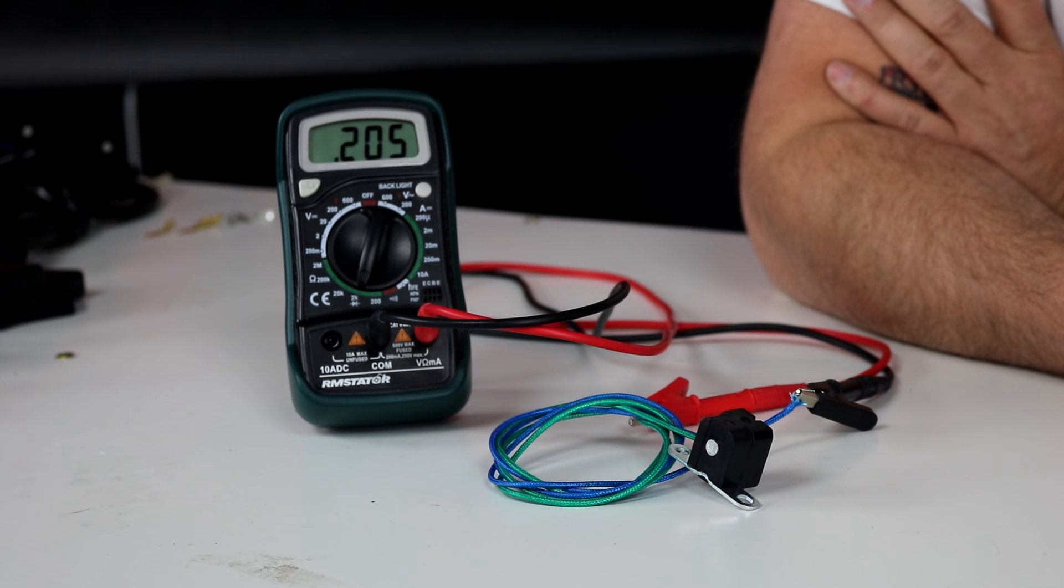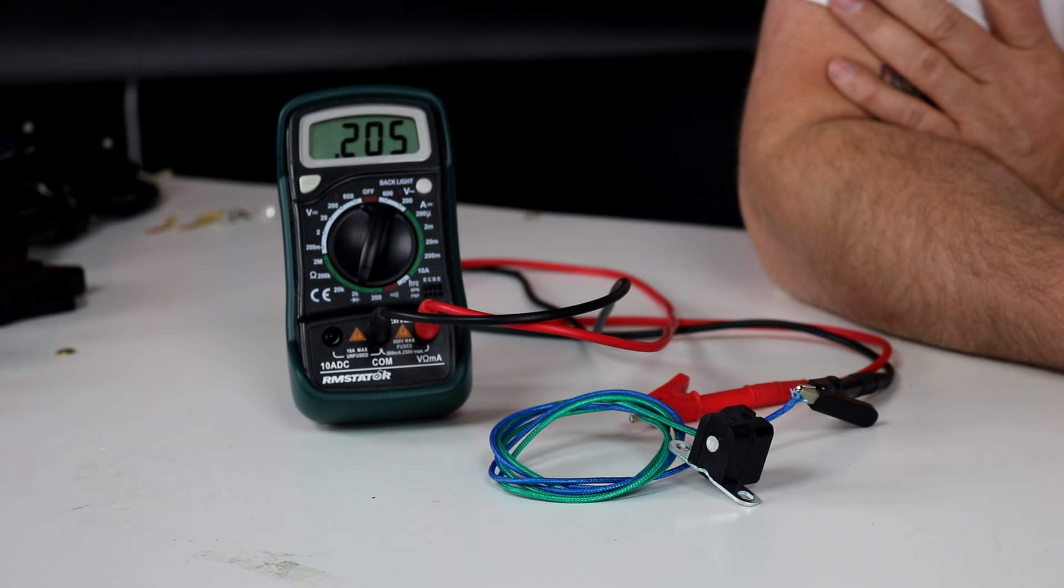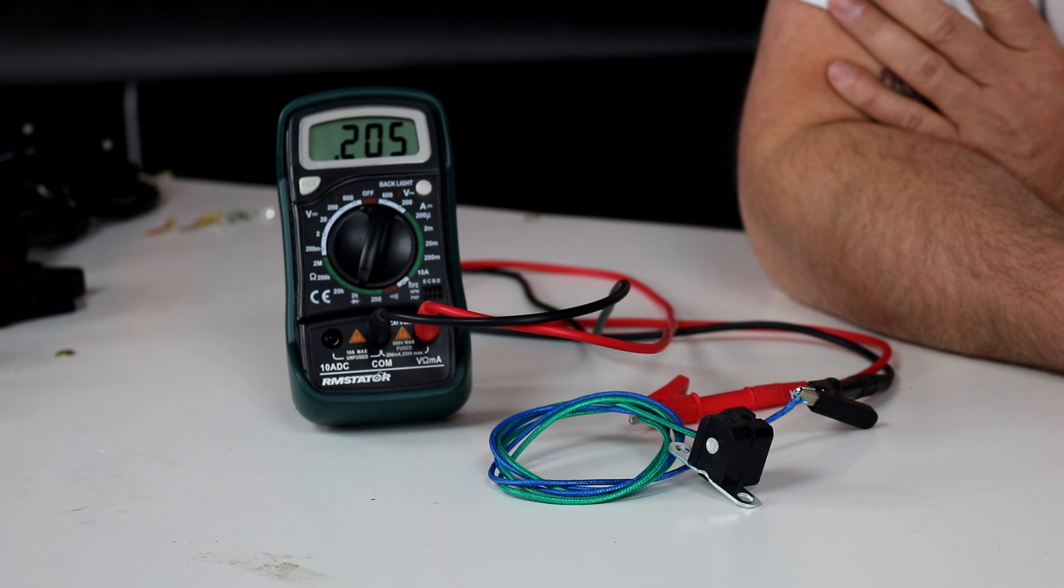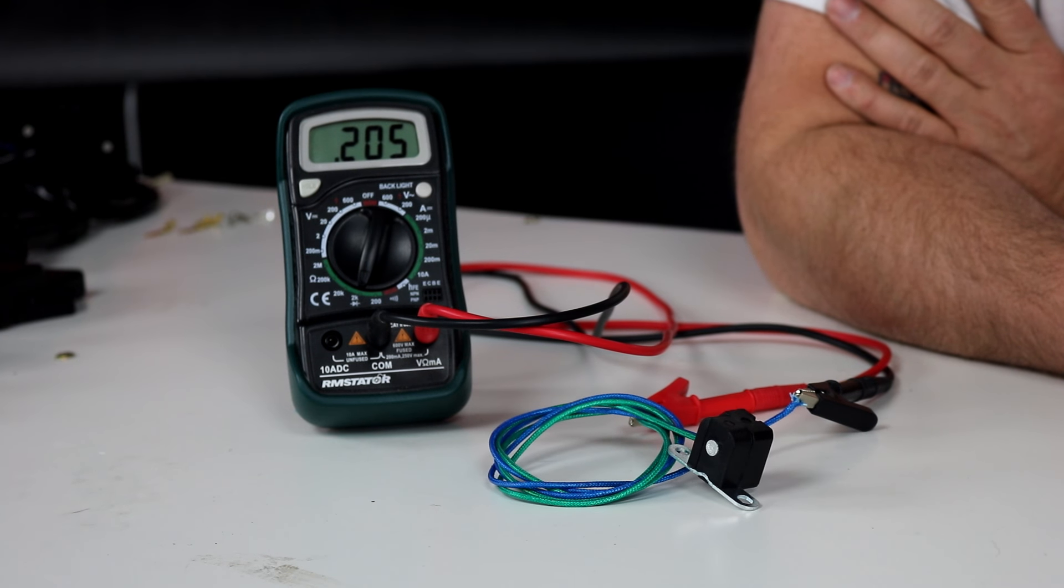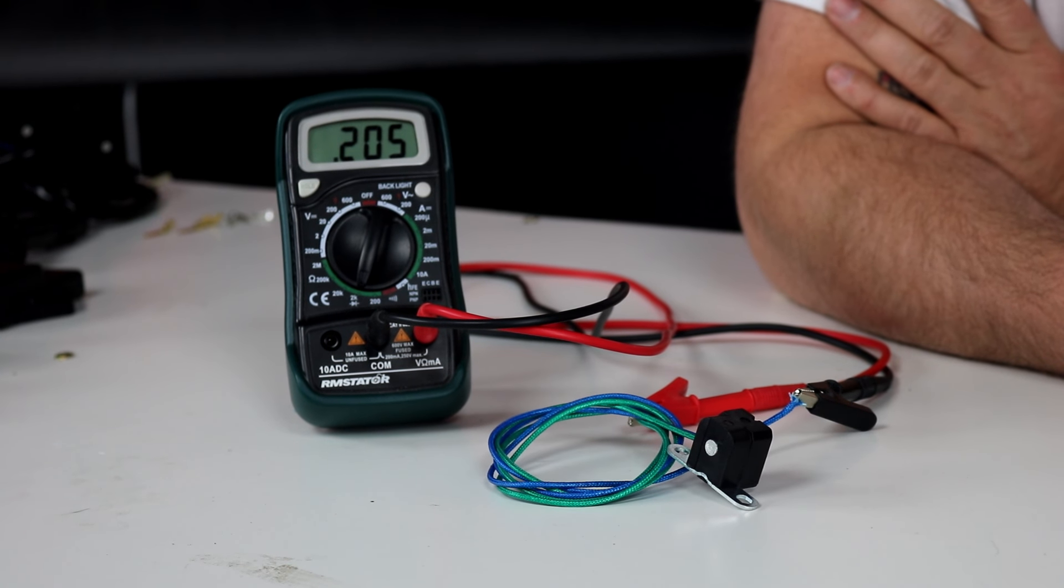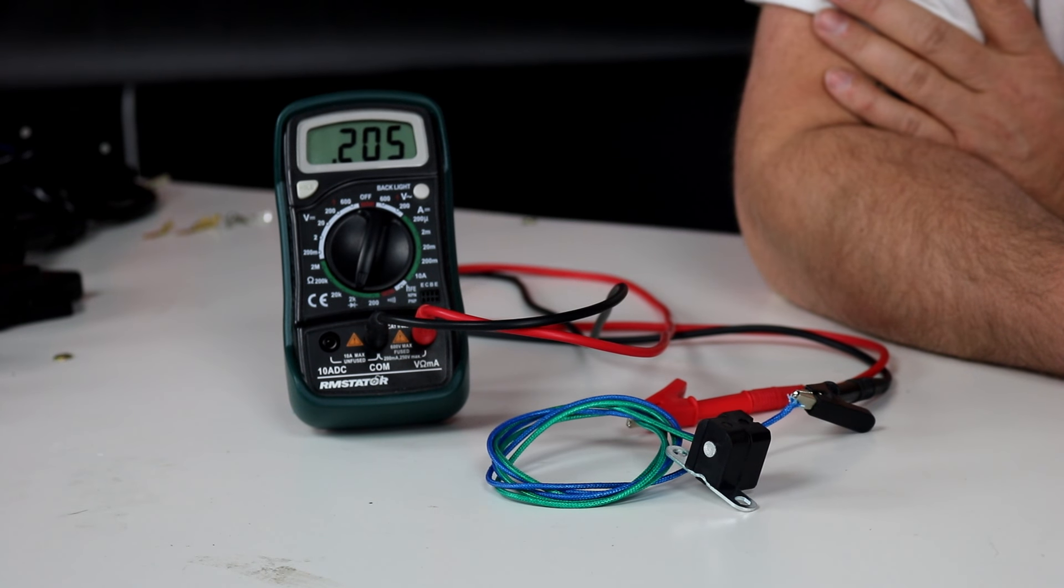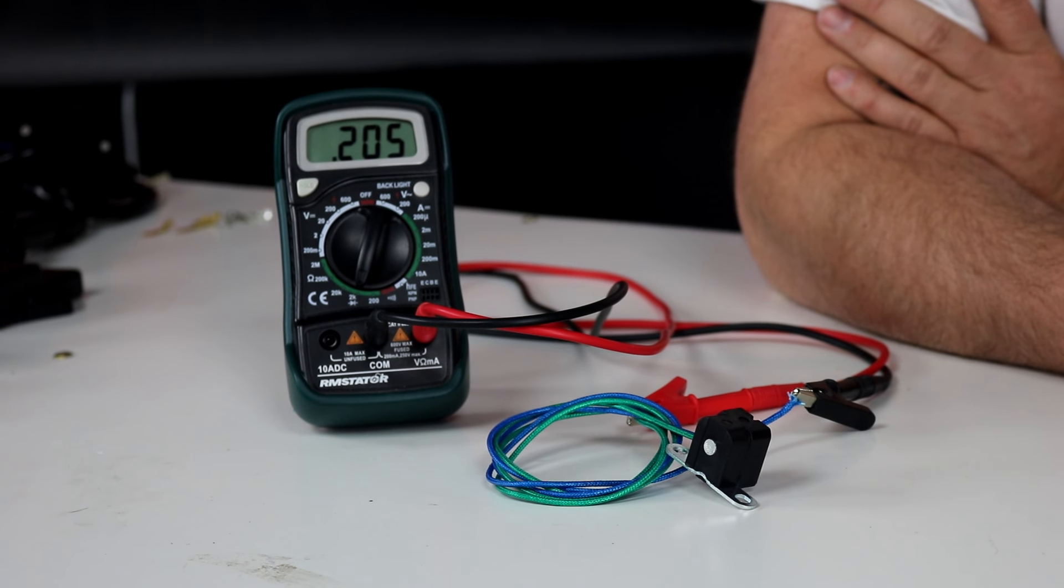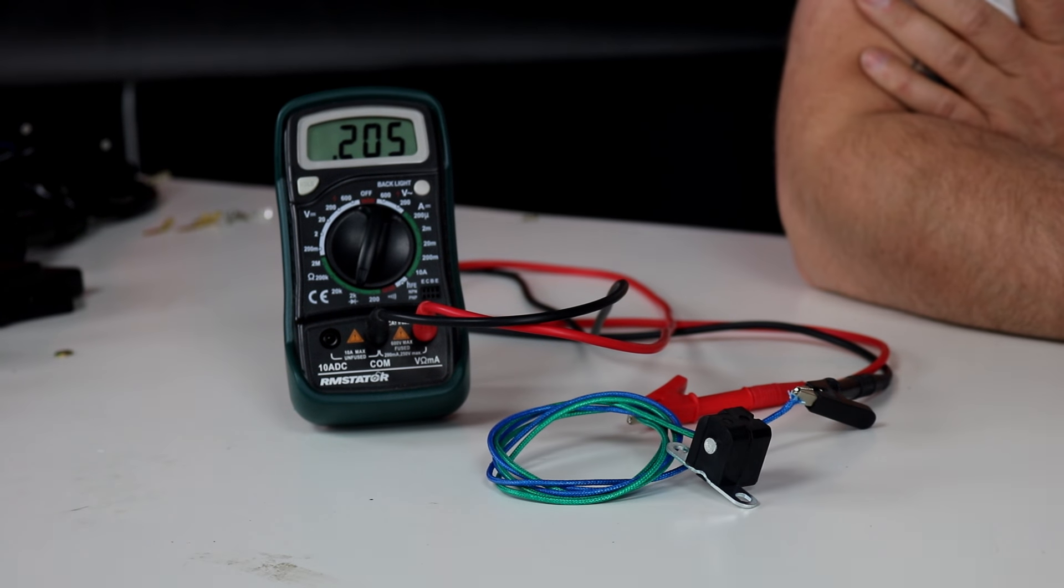So pickup coils are easy to test. You need to know what the spec is and you measure between the two wires or between the one wire and a ground and compare it to the spec. We always give a spec range, generally plus or minus 20 percent, to allow for different types of multimeters that might take the measurement a little differently, but that's how you test it. They do need to be in spec and that's critical for your ignition system, but they're easy to test.